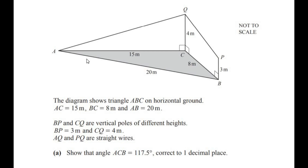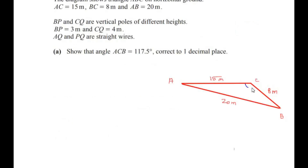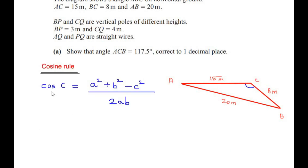Let us start with part one. The diagram shows triangle ABC on horizontal ground. The triangle ABC is shaded and placed on the ground. AC is 15 meters, BC is 8 meters, and AB is 20 meters. We need to show that angle ACB is equal to 117.5 degrees, correct to one decimal place. Let us consider triangle ACB first — three sides are given and an angle is asked.